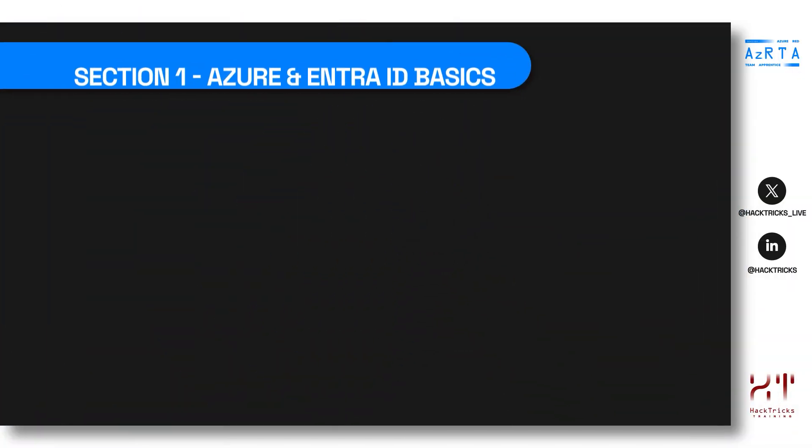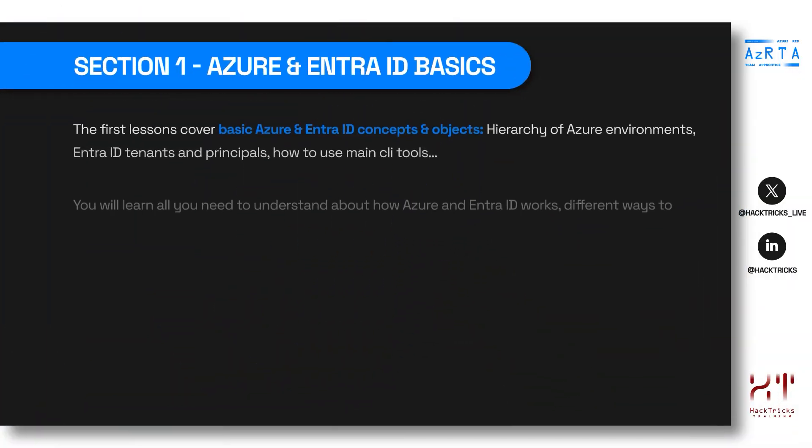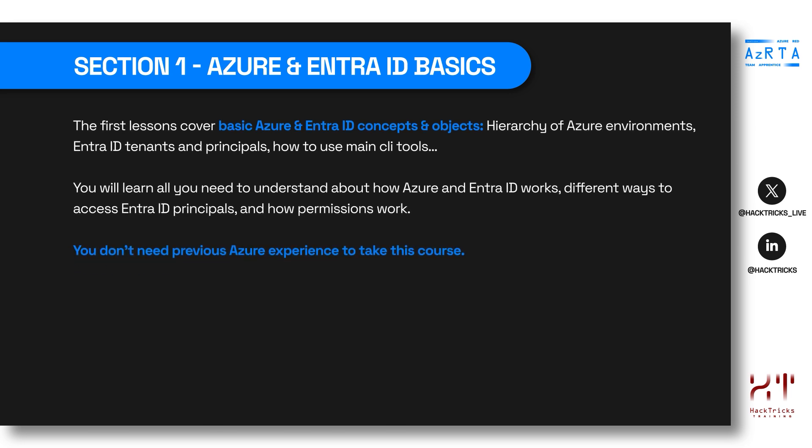The certification is organized into four main sections, the first being Azure and Entra ID Basics. This section covers basic Azure and Entra ID concepts and objects, such as the hierarchy of Azure environments, Entra ID tenants, principals, and how to use the main CLI tools. You will learn all you need to understand about how Azure and Entra ID works, different ways to access Entra ID principals, and how permissions work. This means you don't need any previous experience with Azure or Entra ID, because we start from the very basics before moving into more complex topics.